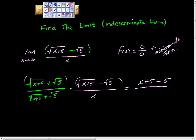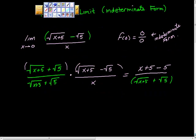All over, I'm just going to rewrite this thing at the bottom: √(x+5) + √5. Now I'm going to simplify this. I'm going to simplify the top and get 5 - 5 is 0 plus x. So we have equals x over x times the √(x+5) + √5. And these cancel.